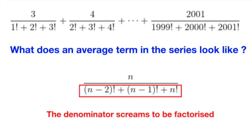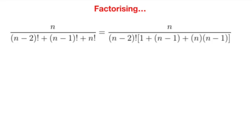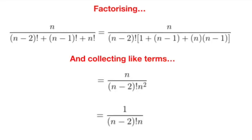In particular, the denominator seems to be a good candidate for factorization, with (n-2)! being the common factor. So let's go with our instinct and do the factorization. We discover that upon factorization, the denominator evaluates to (n-2)! times n², upon which we can cancel out a factor of n with the numerator to get 1 over n times (n-2)!.